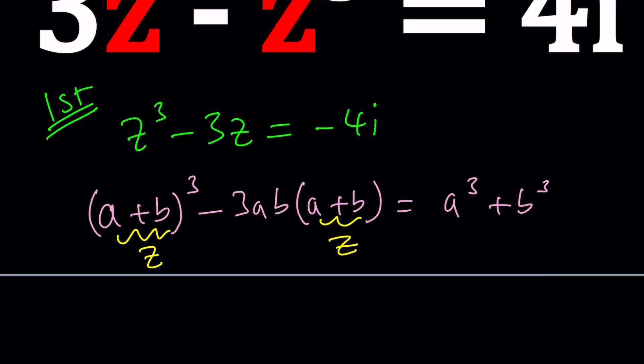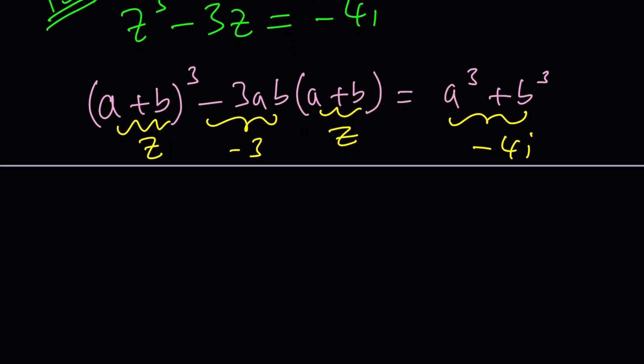That's basically the gist of the cubic formula. But the question is, how do we compare these two equations? You look at the coefficient of z cubed, which is 1 in both, and the coefficient of z, which is negative 3 or negative 3ab. So this needs to be negative 3. And this needs to be the constant term, which is negative 4i.